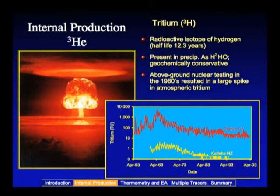Let me move away from the major isotope of helium and talk about the minor isotope, helium-3. It is also produced in the subsurface but through a very, very different mechanism. To understand this, we have to first talk about tritium — a radioactive isotope of hydrogen. It's the most common of all the environmental tracers, short-lived at about 12 years, and it's just present as part of the water molecule, so it's a perfect tracer for water.